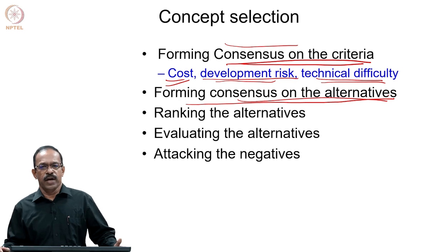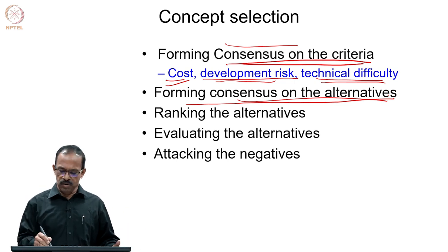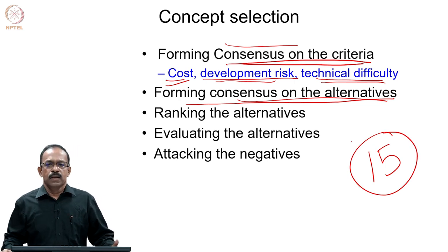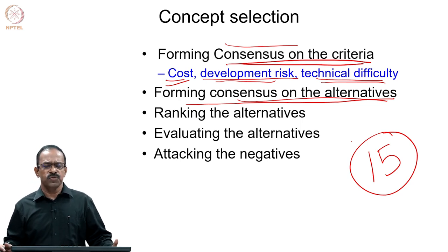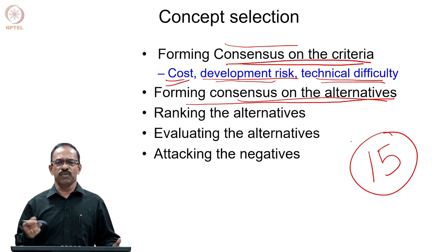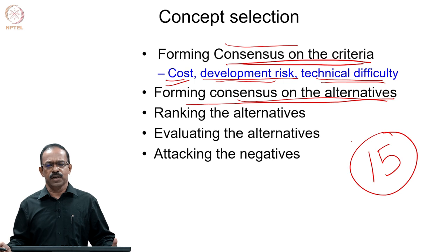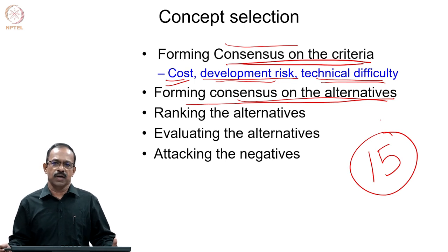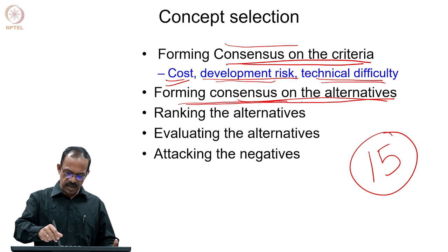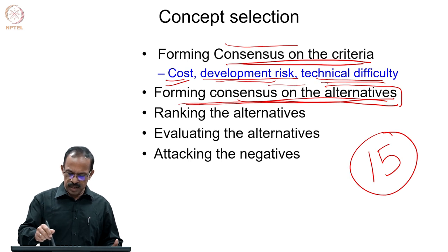Everyone should agree on the criteria to be used. Then, forming consensus on the alternatives — the available concepts. Suppose after converting ideas to concepts, you have around 15 concepts. If everyone feels all 15 are good and can be considered for the next stage, you can go ahead. Otherwise, if the team feels a particular concept is not at all good, you can eliminate it. So you can bring it down to 12 or 13 depending on the team's consensus. The team should have consensus on the criteria and also on the alternatives.